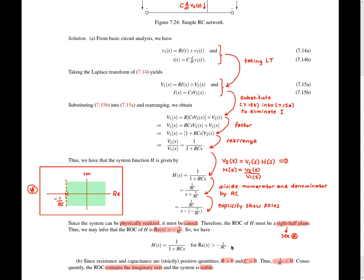So now we've completed part A of the example, finding big H. Now we proceed to part B, where we're asked to determine whether the system is BIBO stable. This can be easily determined from the region of convergence of big H. Because R and C are strictly positive quantities, minus 1 over RC must be strictly negative, meaning the pole is strictly to the left of the imaginary axis. Therefore, the region of convergence includes the imaginary axis, and therefore the system is stable.